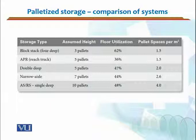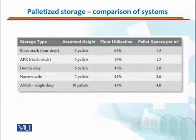For automated storage and retrieval systems, even for a single deep configuration, the assumed height is 10 pallets because they are used in high bay warehouses. But floor utilization would be 48% — you still need more space for maneuvering and movement of those automated systems or cranes. The pallet space would be much higher at 4 per square meter, which includes the physical space of the pallet as well as the space around it.